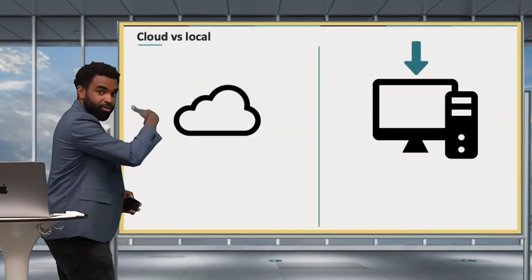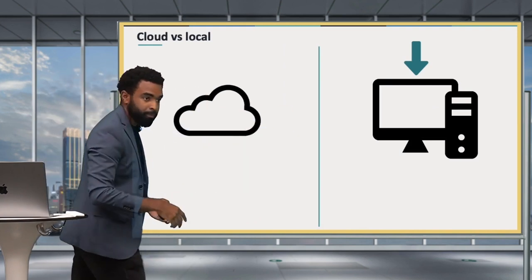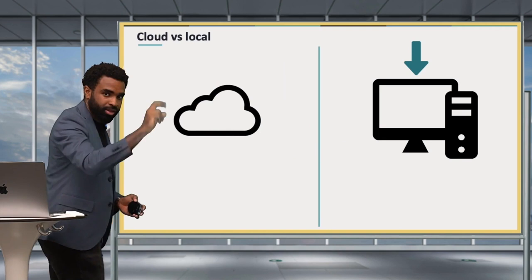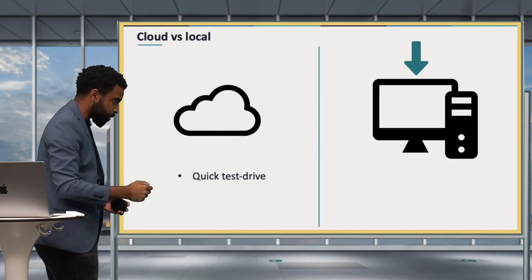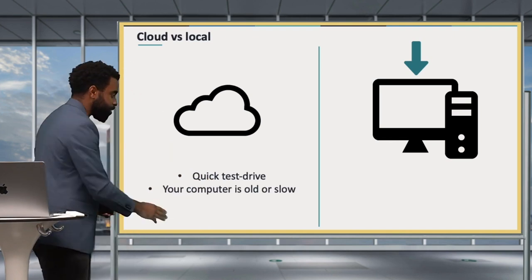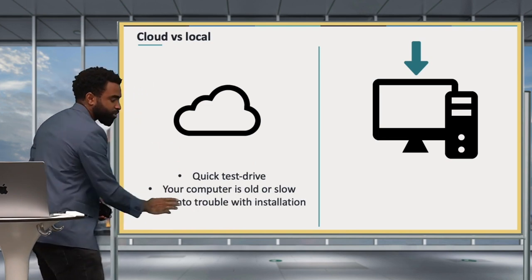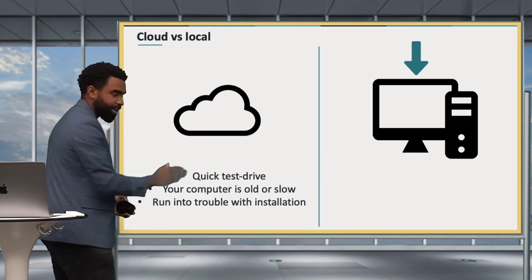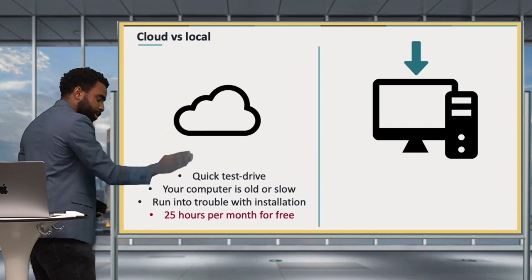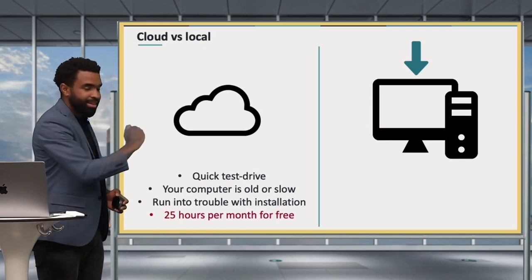The other distinction to have in mind is cloud versus local. Will you work with R on the internet, on the cloud, or will you download it to your local computer? Most people download it to their computers, but there are a few reasons why you might choose to work on the cloud with a service called RStudio Cloud. One reason is you just want to give R a quick test drive and don't want to waste time installing software. Another reason is your computer is old or slow and can't run R competently. A final reason is you've run into trouble installing R and RStudio. Note that RStudio Cloud only gives you 25 free project hours per month; after that you have to pay.